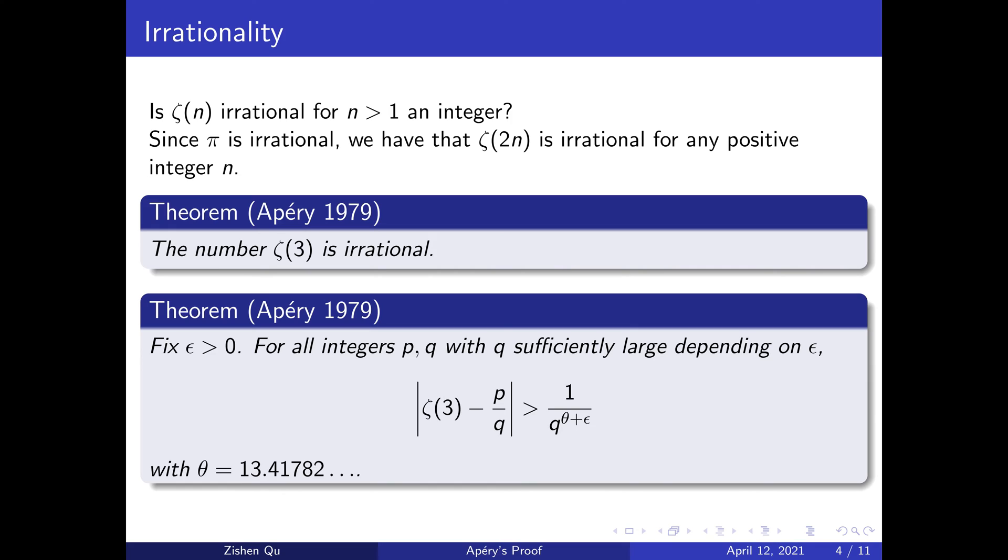One of the properties we may be interested in is irrationality. Indeed, we can ask if ζ(n) is irrational for all n greater than 1. As Euler had shown that ζ(2n) is the power of π times a rational number, we already have that ζ(2n) is irrational. And here we come to Apéry's result. He was able to show that ζ(3) is irrational.